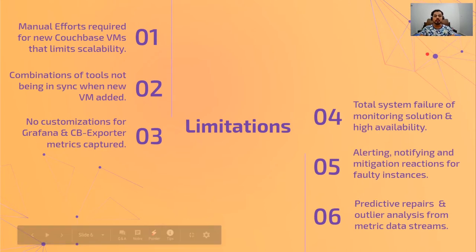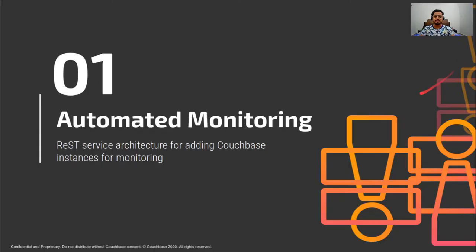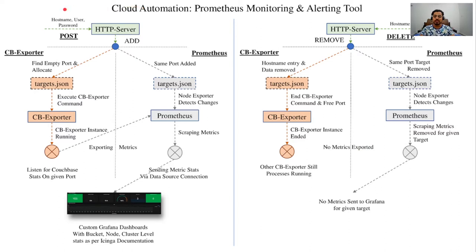To mitigate the first and second limitations, we created a REST-based architecture. A user sends credentials as a REST query to our HTTP server, which contains node exporter, Prometheus, alert manager, and related software. The HTTP server maintains a target JSON file for Couchbase exporter and Prometheus, capturing hostname, username, password, and a dynamically allocated port number, so we can also remove instances cleanly.